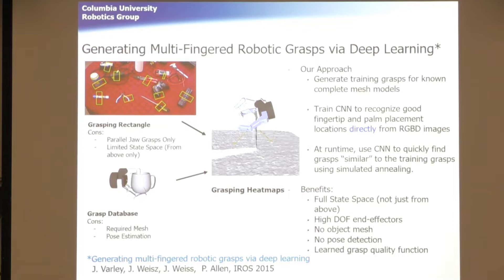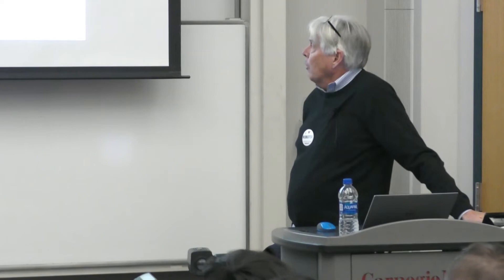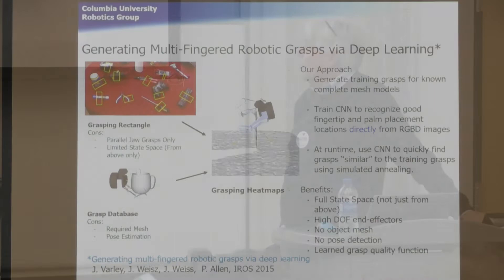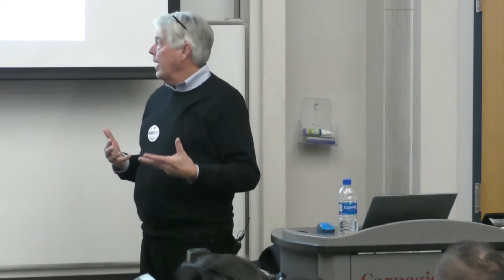Our approach is to generate training grasps for known complete mesh models using the simulator, then train the CNN to recognize good fingertip and palm placement locations directly from RGB images. At runtime, we use the CNN to quickly find grasps similar to the training grasps and use simulated annealing to fine-tune them. The benefits are: it's a full state space, we can grasp from any direction, we can use high-degree-of-freedom multi-fingered hands, we don't need to take a scan to create a mesh, we don't need pose detection — it's all implicit in the network.